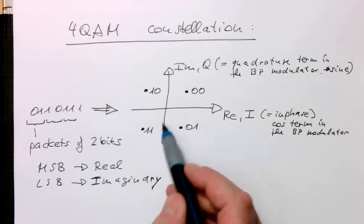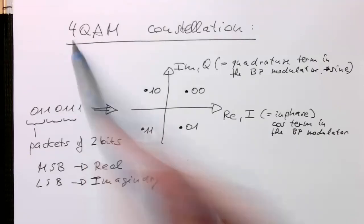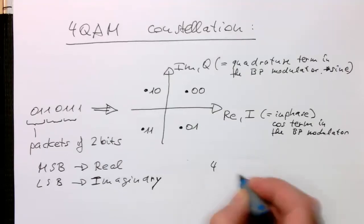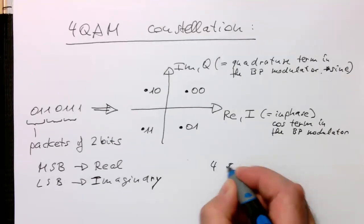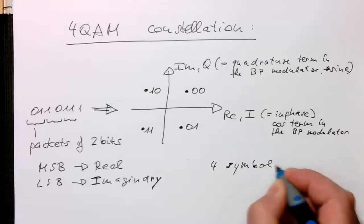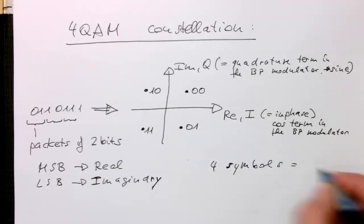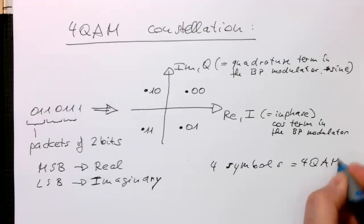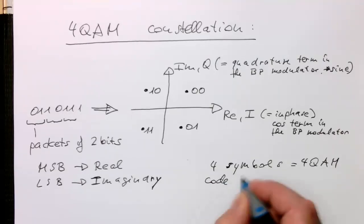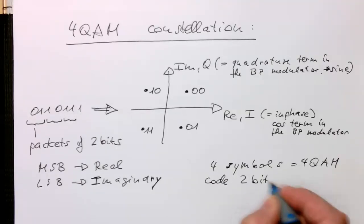And that's the reason why it's called 4QAM, because we are getting four symbols with that. Four symbols. And this means here, four QAM. So we are able to code two bits per symbol.